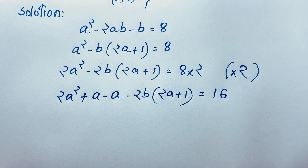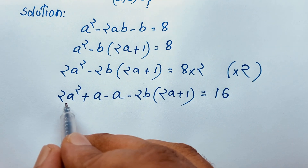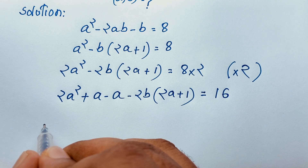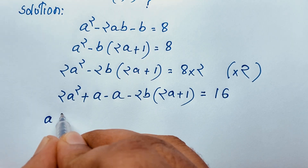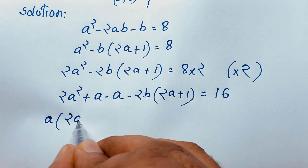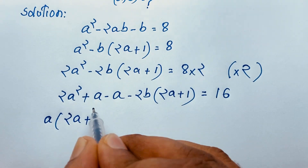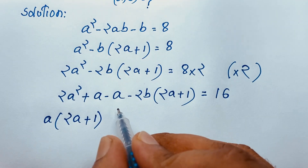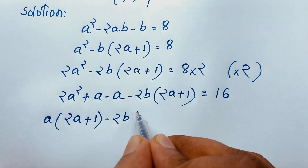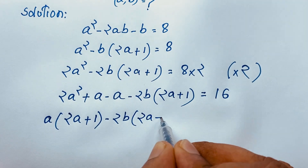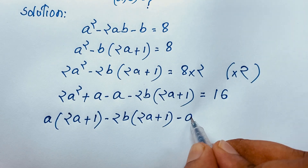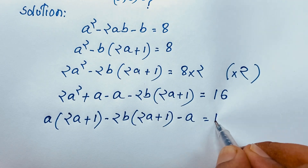Now you can see that a is common. If I take a as a common factor, then dividing gives 2a and dividing again gives 1. So I take this value here: 2b times (2a + 1) then negative a equals 16.